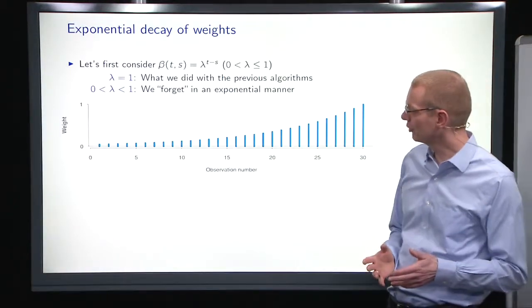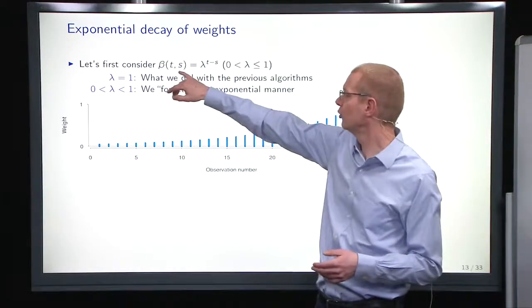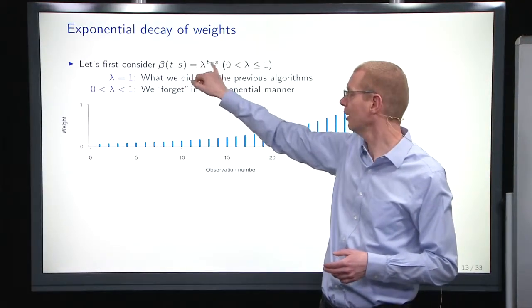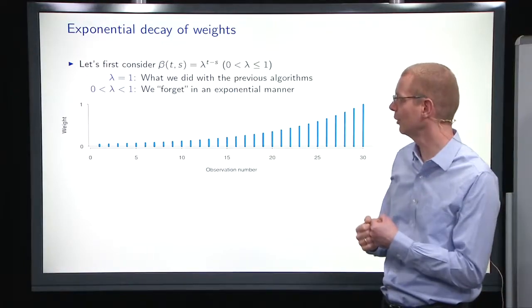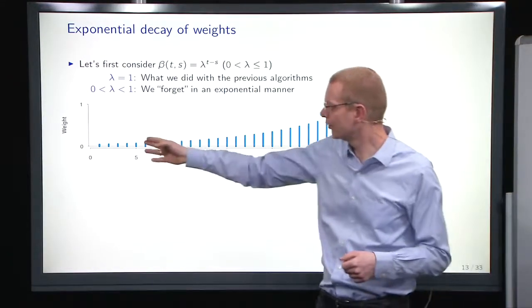Basically, to be a little bit more generic, what we typically do is to just use lambdas with some power of the time difference between two observations to give the weight. That's the usual thing here.